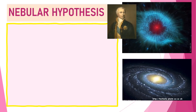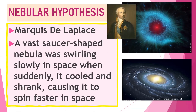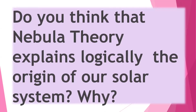Lastly, there is the nebular hypothesis. Marquis de Laplace was the one who explained this hypothesis or theory, which is somewhat widely accepted. The theory suggests that the solar system formed approximately 4.6 billion years ago from a giant rotating cloud of gas and dust known as the solar nebula. Then slowly it cooled and shrank, causing it to spin faster in space, forming the solar system. Do you think that the nebular hypothesis explains logically the origin of our solar system?